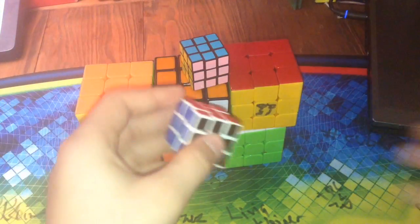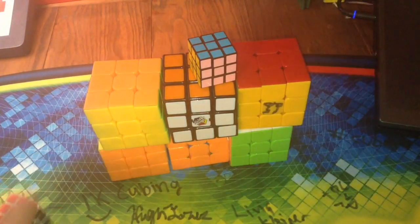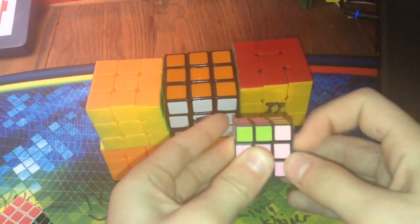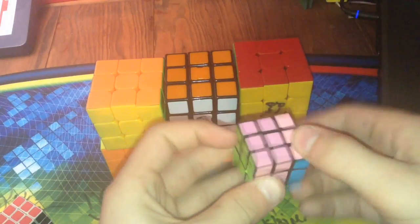Alright, so now let's go on to 3x3s. Going on to normal 3x3s, I have 2 minicubes. This one with a normal color scheme with a black side. This one has like some weird color scheme. It doesn't turn as good as the other one.